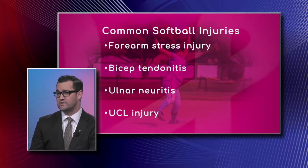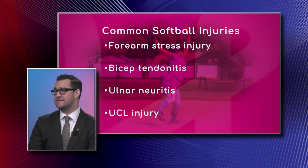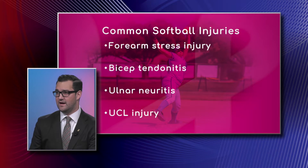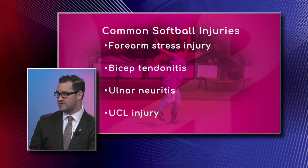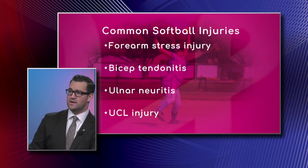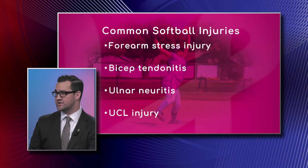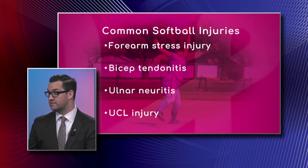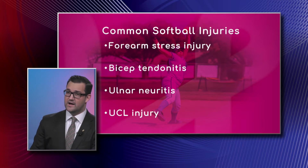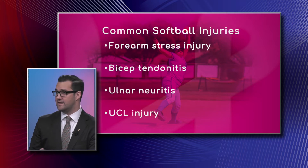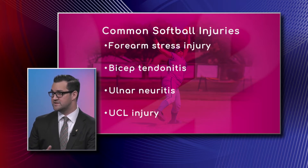The third one is ulnar neuritis. Basically during the wind-up, as the elbow comes by, it can hit the hip of the patient. That constant compression of the medial aspect of the elbow can cause irritation of the ulnar nerve — the funny bone area. You can get some pain at the medial elbow but also numbness in the fourth and fifth digits of the hand.